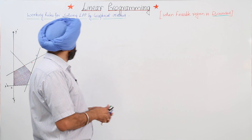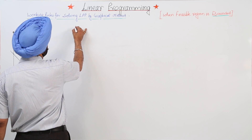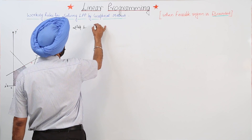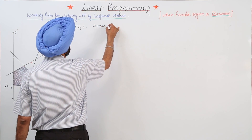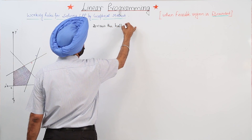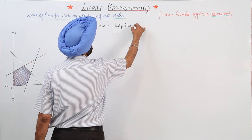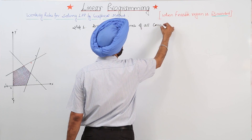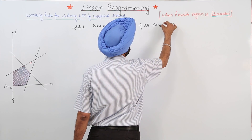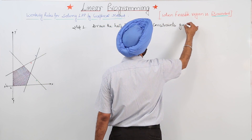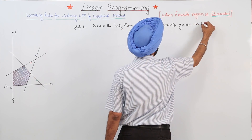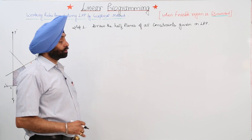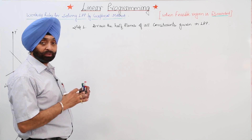So how to solve it? Let's move with some easy steps. Step number 1: draw the half planes of all the constraints given in the linear programming problem. This means we have to draw first all the constraints.